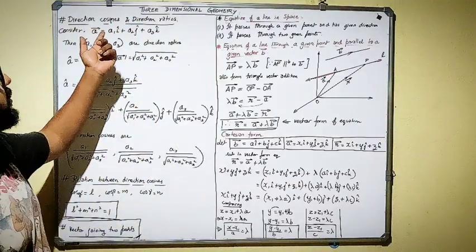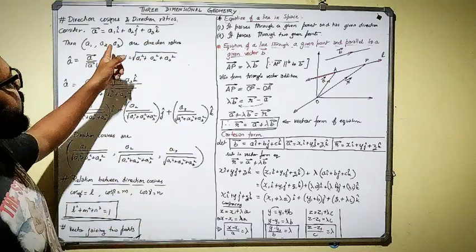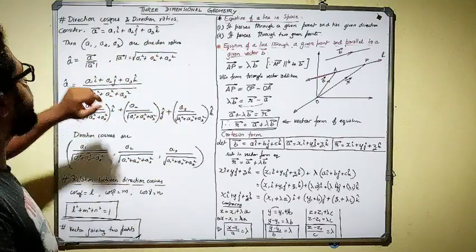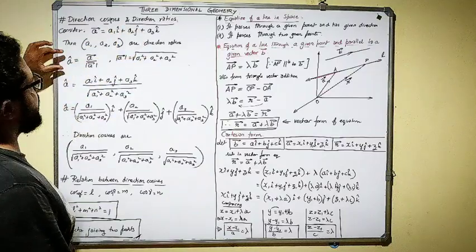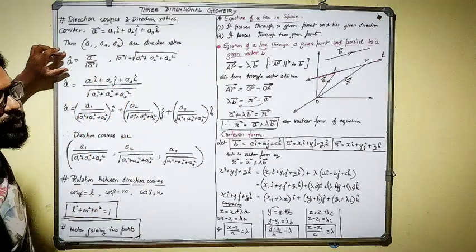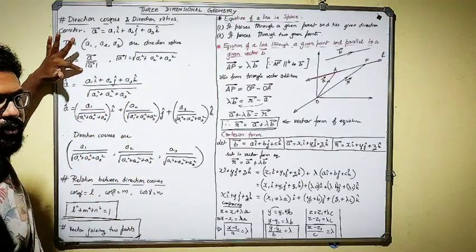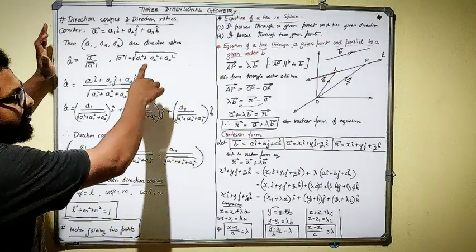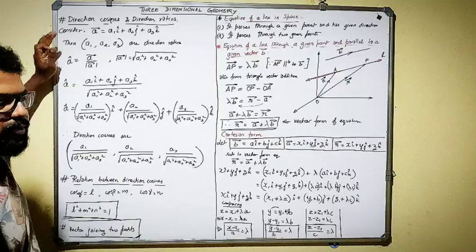Suppose I consider the vector a1 i-cap plus a2 j-cap plus a3 k-cap — then a1, a2, a3 are the direction ratios; they are simply the components. Now, the unit vector is the vector divided by its magnitude. The magnitude is the square root of the sum of individual component squares: square root of a1² + a2² + a3².